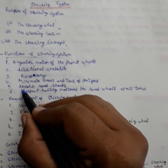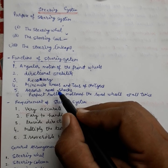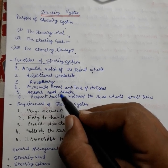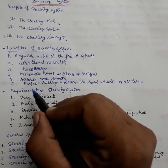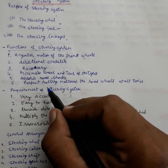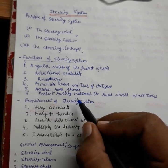Then to absorb a major part of road shocks thereby preventing them to get transmitted to the hands of driver. Then the last one is to provide perfect rolling motion of the road wheels at all the times.